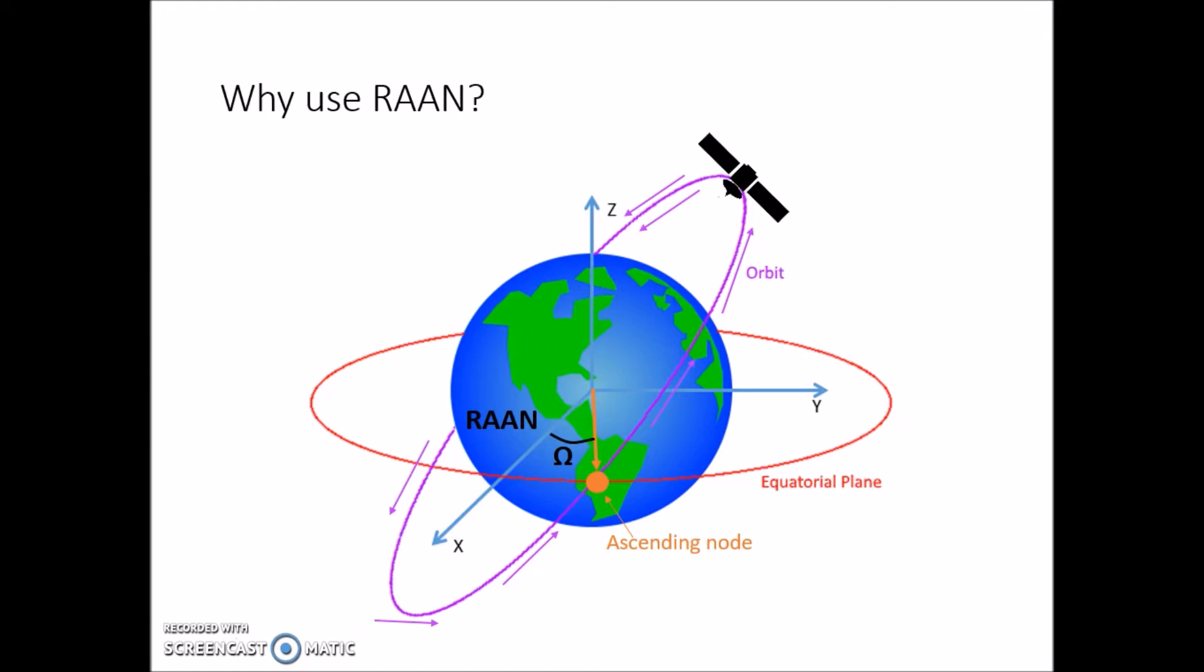What is RAAN used for? RAAN is used to locate the orbital plane. The other thing used to locate the orbital plane is inclination, which is the angle between the equatorial and orbital planes. But again, we're not here to talk about inclination, we're talking about RAAN.